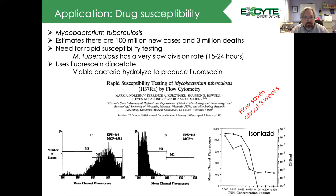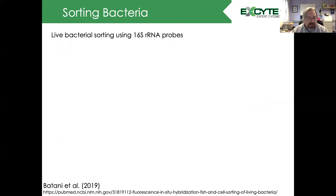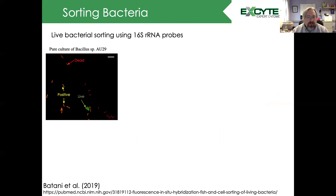Another thing we can do with bacteria is sort them and isolate them for downstream applications. Most bacteria we identify using these basic kits, but recently a technique using 16S ribosomal probes was developed. Published by Banati et al., they were able to develop a methodology to get 16S ribosomal probes into live bacteria without having to permeabilize them.